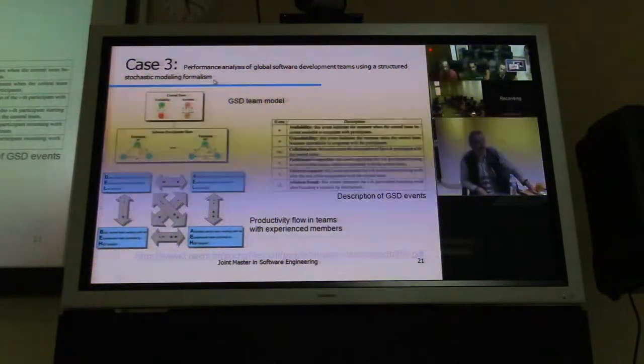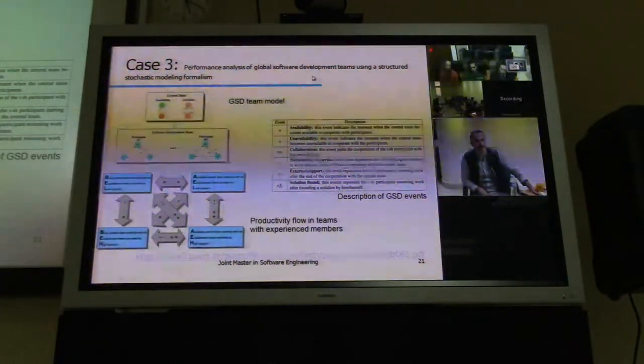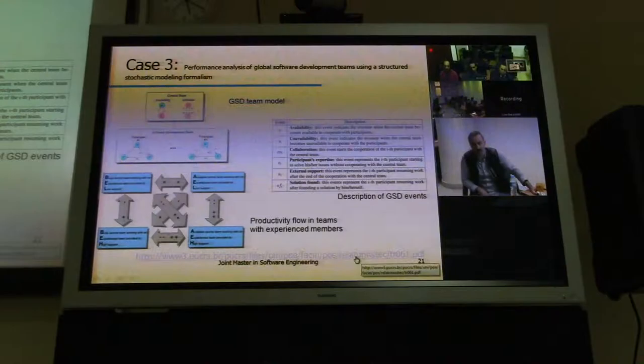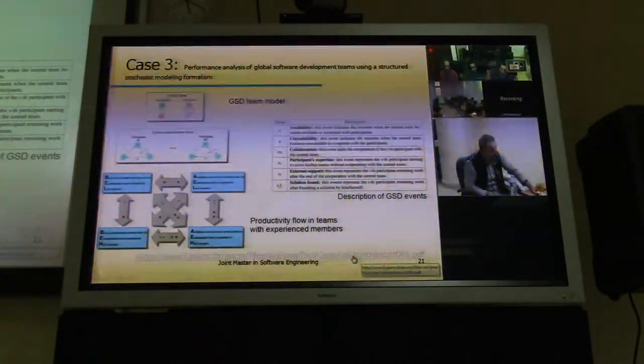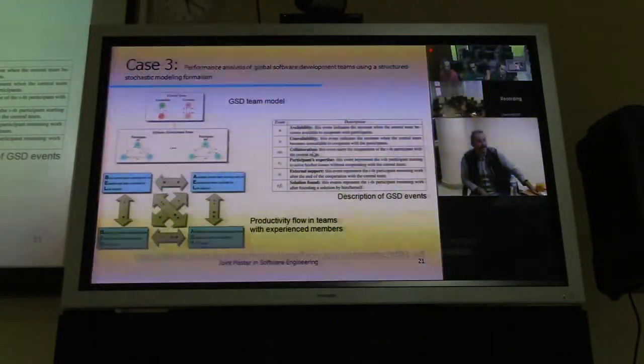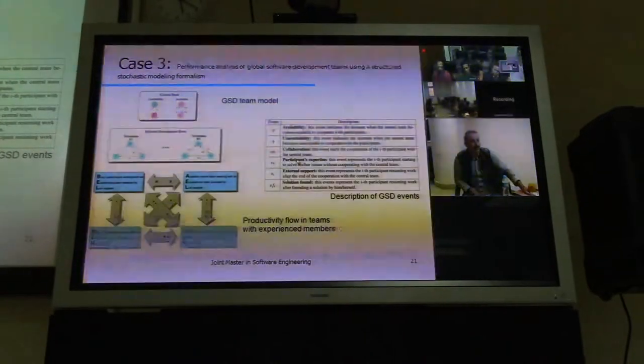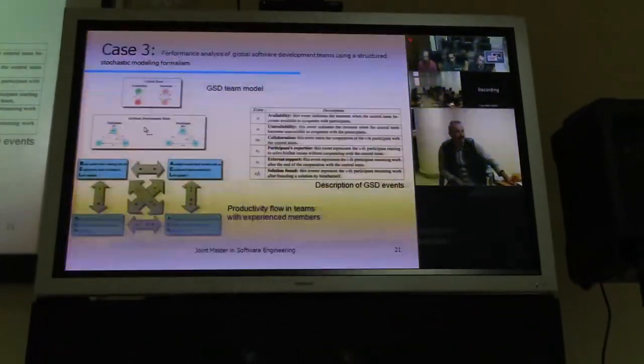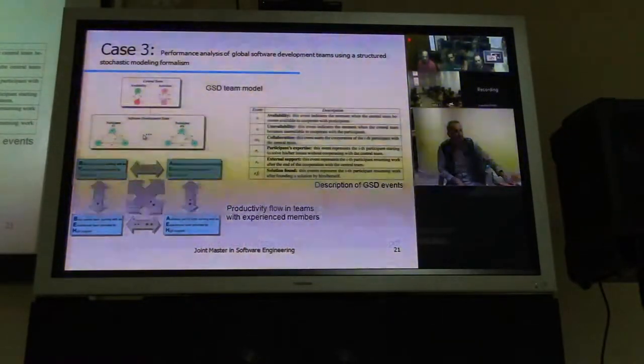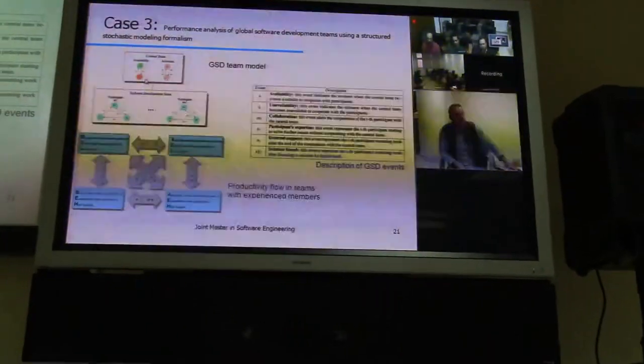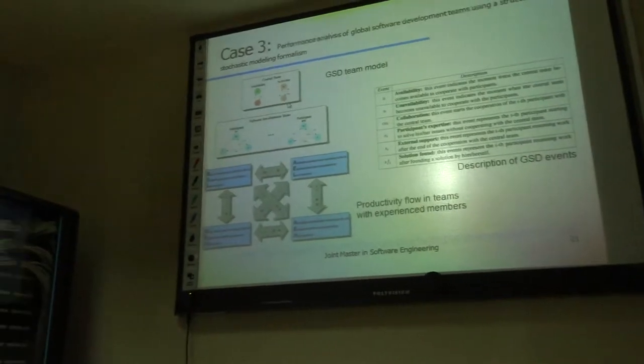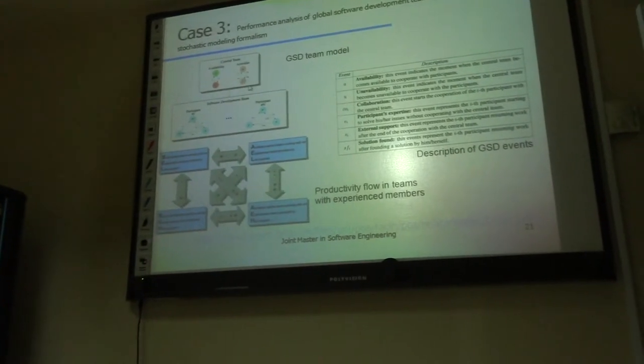A third part of the literature talks about performance analysis of GSD teams. Again, all the references are there and also the URLs for you to work on. What this study has done, it has identified the links between availability and unavailability, collaboration, participants expertise, and so on. So this is a central team and this is a software development team. And what you can actually see here is the collaboration between the different resources. You can actually see the expertise of people and how it is related to different people.